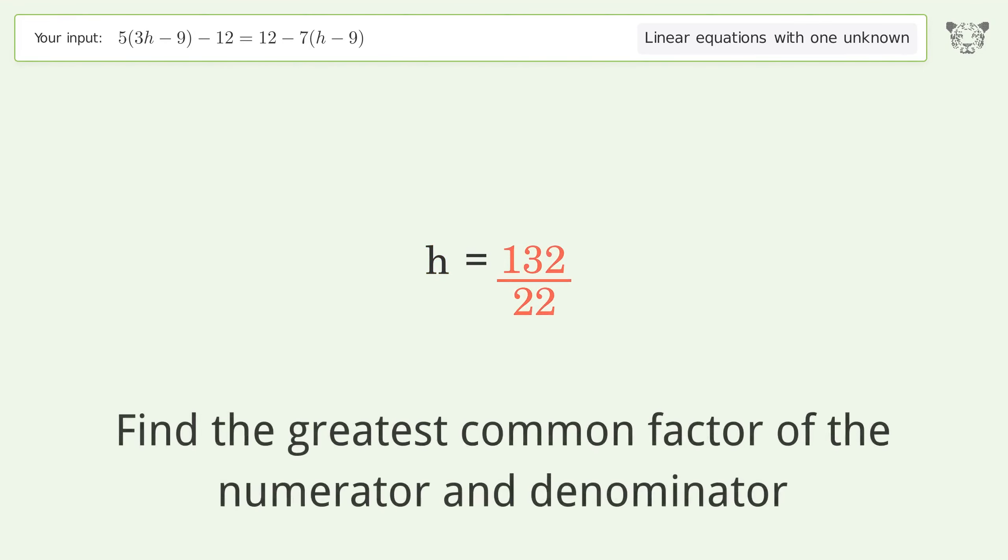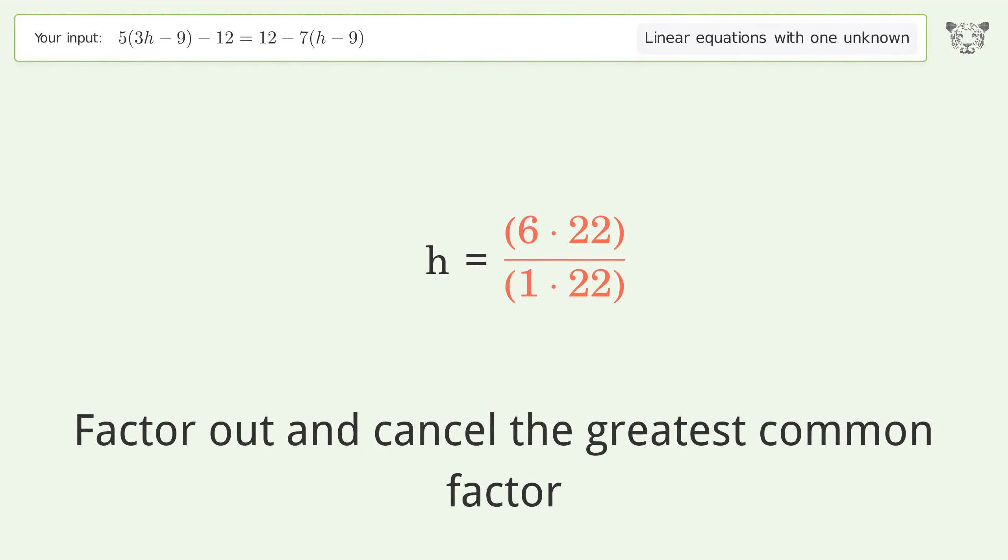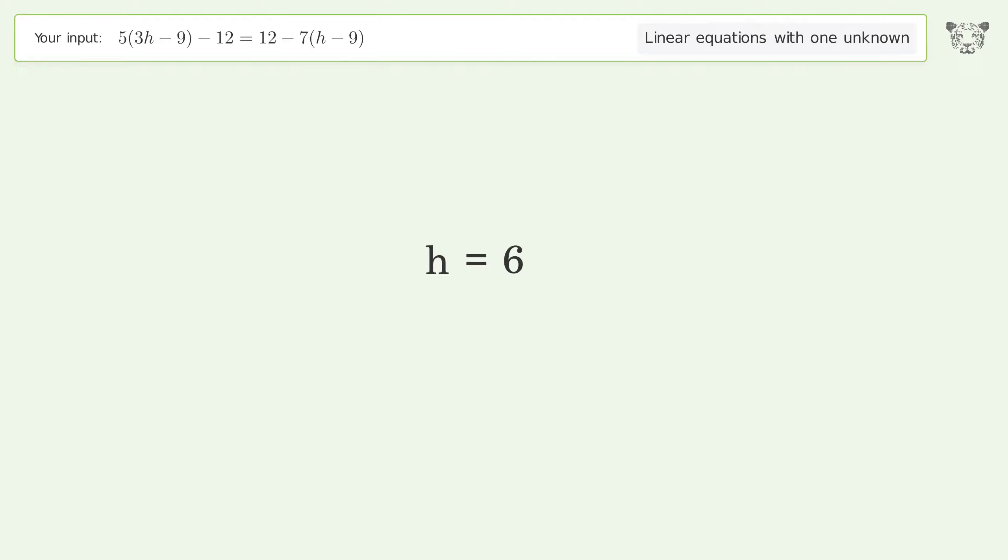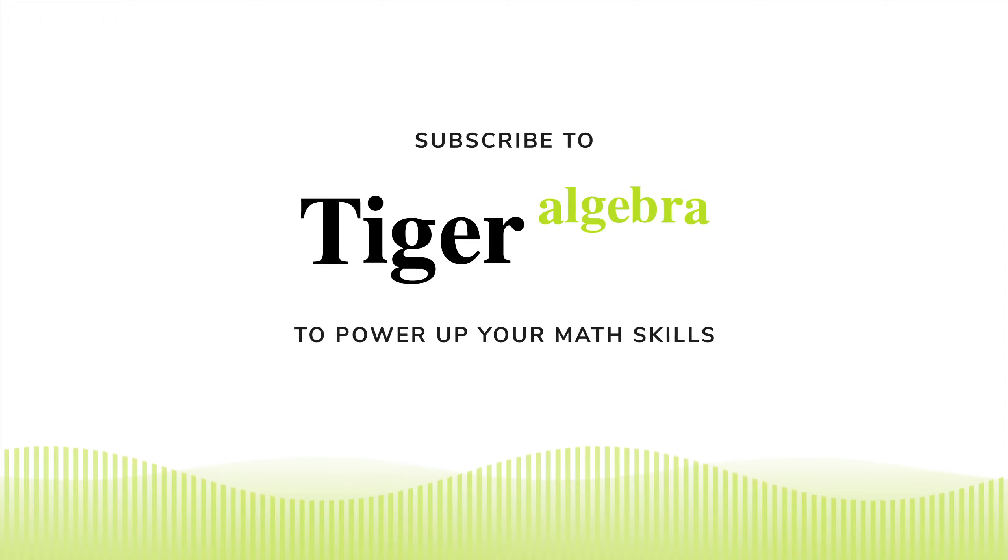Find the greatest common factor of the numerator and denominator. Factor out and cancel the greatest common factor. And so the final result is h equals 6.